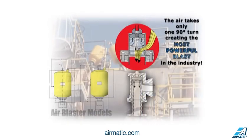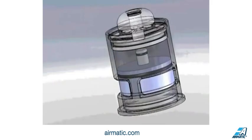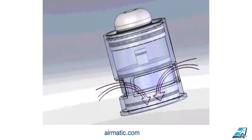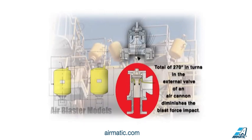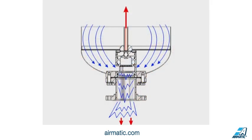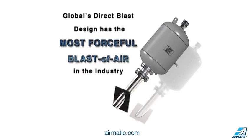Why are Global Air Blasters so powerful? Our unique valve design ensures that the air blast takes only one 90-degree turn. Some competitors' models route the air through a series of corners which total 270 degrees in bends. This winding path slows down the discharge of air and greatly reduces the blast force. Our direct blast design is why Global's air blasters have the most forceful blast of air in the industry.